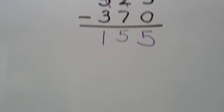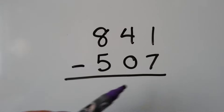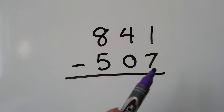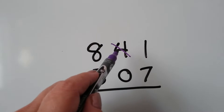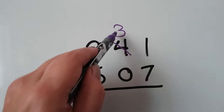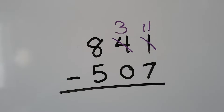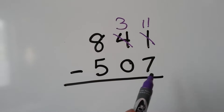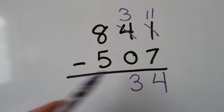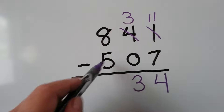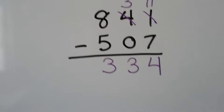Let's practice again with 841 minus 507. In the ones place we have 1 and need to take 7 away — we can't, so we ask the 4 tens for one. It becomes 3, giving 10 to the ones place, so now we have 11 ones. 11 minus 7 is 4, 3 minus 0 is 3, and 8 take away 5 is 3. We have 334.